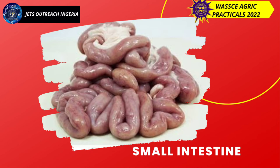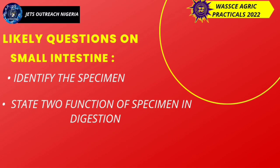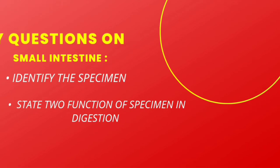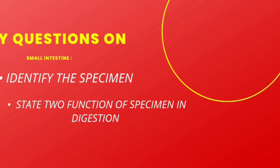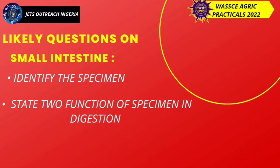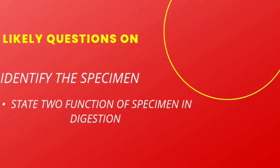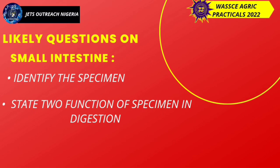Next is the small intestine. Likely questions: identify the specimen, state two functions of the specimen in digestion. Your answer: end products of digestion are absorbed in the small intestine. Breakdown of food also occurs in the small intestine.